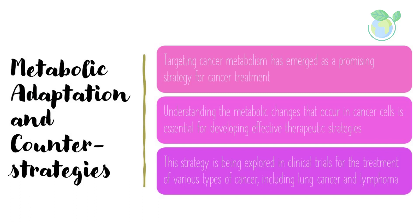Metabolic Adaptation and Counter Strategies: Targeting cancer metabolism has emerged as a promising strategy for cancer treatment. Understanding the metabolic changes that occur in cancer cells is essential for developing effective therapeutic strategies. By targeting these metabolic changes, researchers may be able to develop drugs or other treatments that can help to slow or even stop the growth and spread of cancer. Inhibiting glycolysis, for example, has been shown to be effective in slowing the growth of cancer cells in vitro and in animal models. This strategy is being explored in clinical trials for the treatment of various types of cancer, including lung cancer and lymphoma.